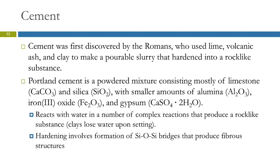Then we have cement. Cement was first discovered by the Romans — they used lime, volcanic ash, and clay mixed with water to make a pourable slurry that would harden into a rock-like substance. This is great because instead of finding a rock and carving it into the shape you need, which is very difficult, you can pour cement into a shape, let it harden, and have something very similar.